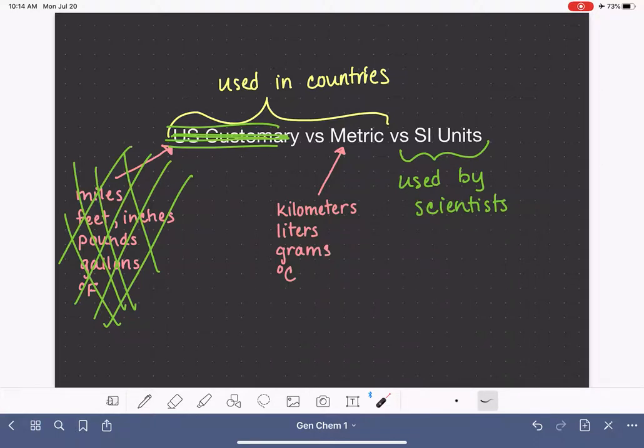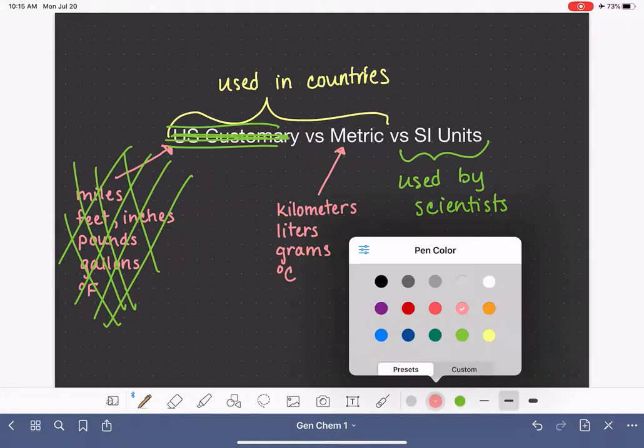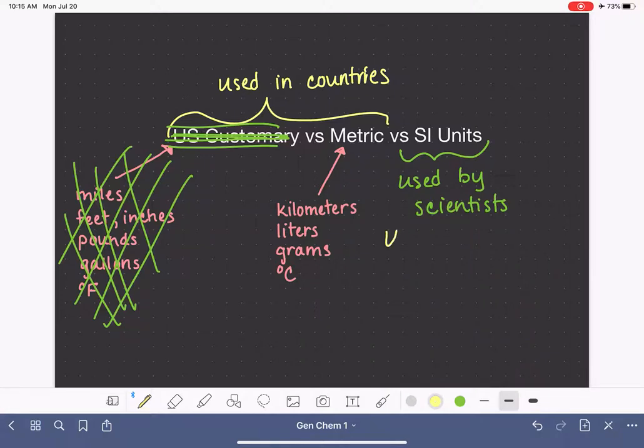Let's talk about SI. SI stands for international system, but in French, system international. So it stands for the international system of units, which makes sense because this is something that's used by all scientists around the globe.